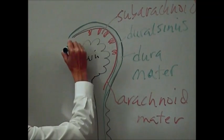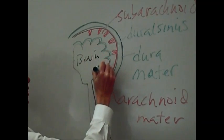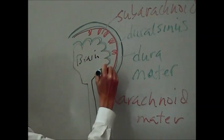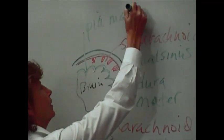And then finally, you have the last layer, which is the pia mater. And that is the one that adheres right up against the surface of the brain and spinal cord. And so it's very delicate.